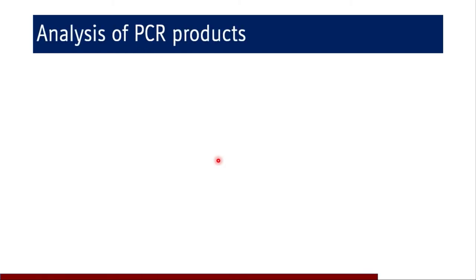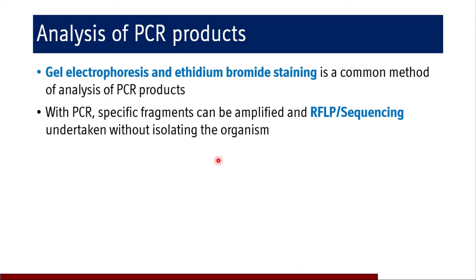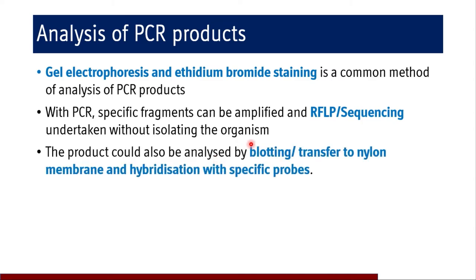Coming to the analysis of PCR products, we need to determine whether the PCR product was obtained correctly and whether we have the sequence of interest. Gel electrophoresis and ethidium bromide staining is a common method of analysis. With PCR, specific fragments can be amplified and RFLP or sequencing can be undertaken without isolating the organism. The product can also be analyzed by blotting or transfer to nylon membrane and hybridization with specific probes.